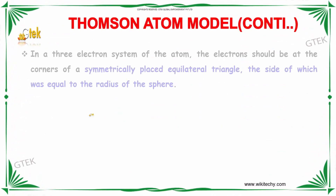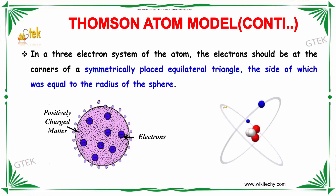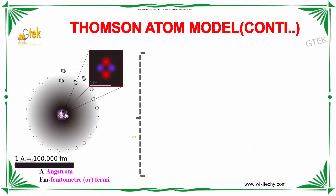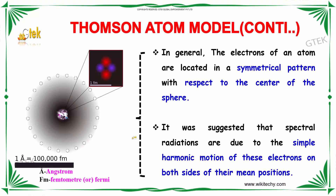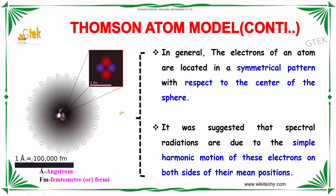In a three-electron system of the atom, the electrons should be at the corners of a symmetrically placed equilateral triangle, the side of which is equal to the radius of the sphere. In general, the electrons of an atom are located in a symmetrical pattern with respect to the center of the sphere. It was suggested that the spectral radiations are due to the simple harmonic motion of these electrons on both sides of their mean position.